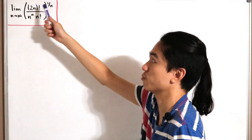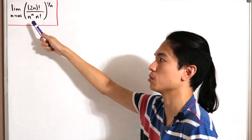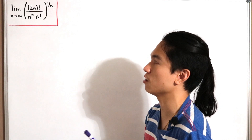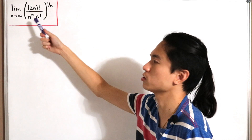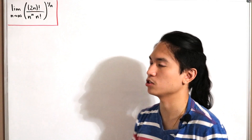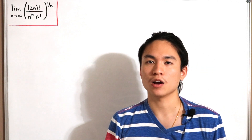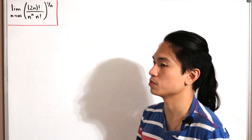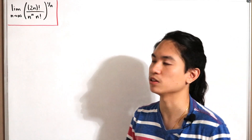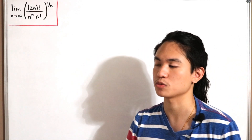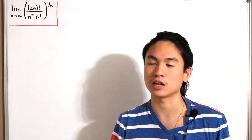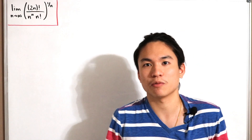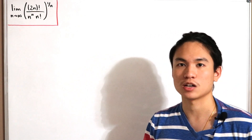There's a lot going on — we have factorials in both the numerator and denominator, and the whole expression raised to the power 1 over n. The key idea is to rewrite the inside expression in the form of a series. Eventually, the last couple of steps convert into something very recognizable — we'll get there without spoiling too much of the fun.